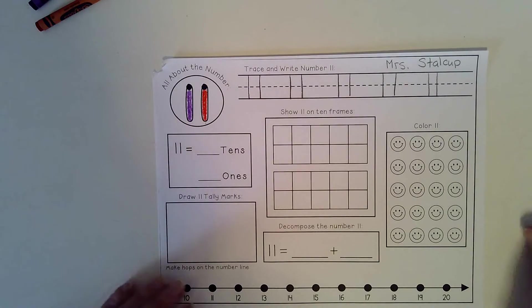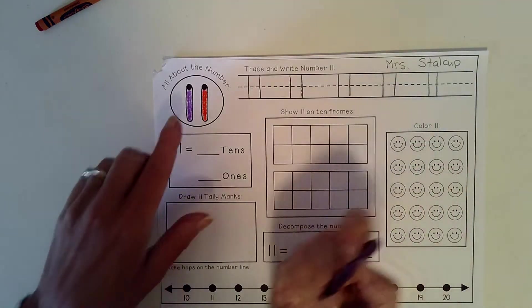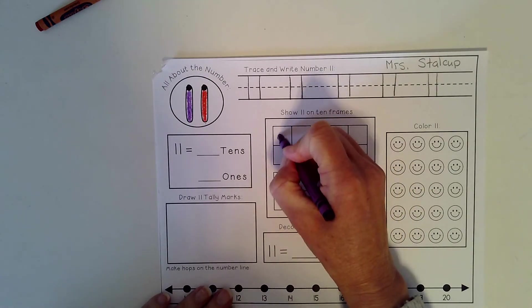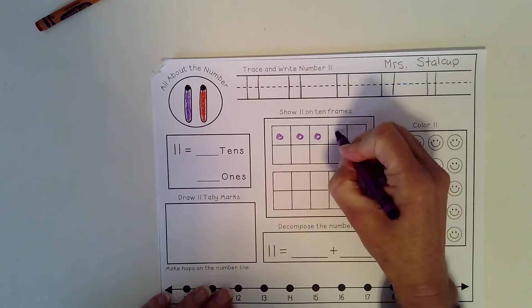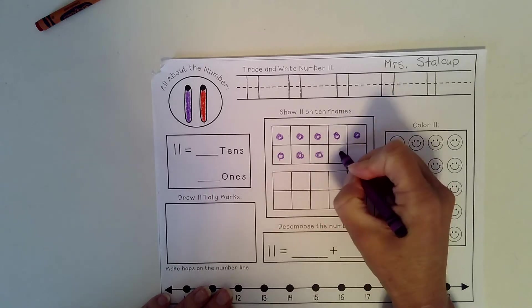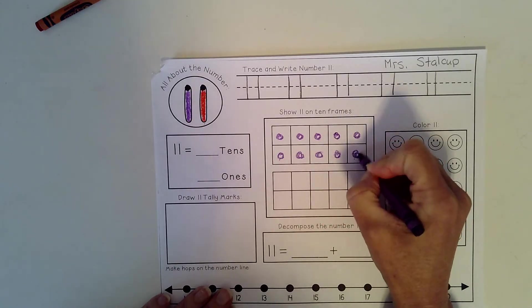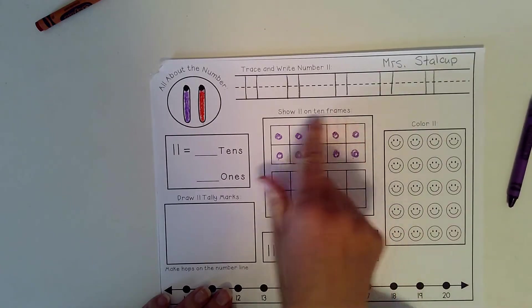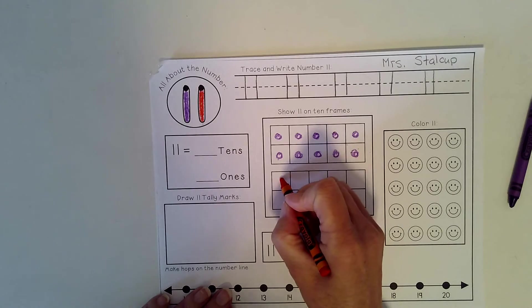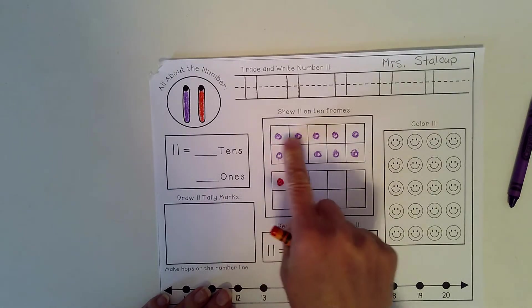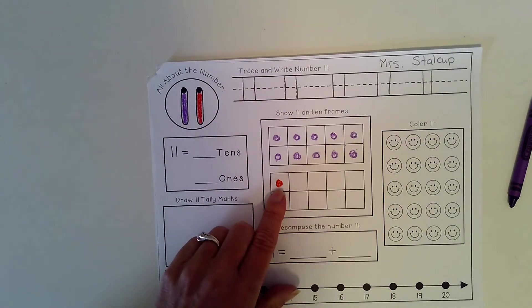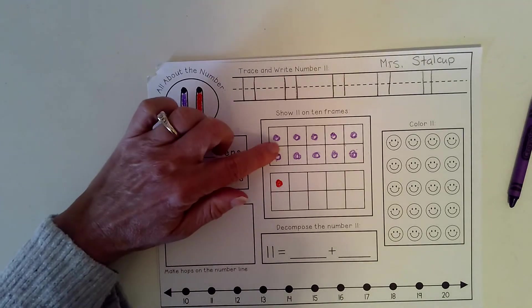Let's draw the number 11. So I'm going to take the purple for my tens first, whatever color you colored your tens with. And let's color 10: 1, 2, 3, 4, 5, 6, 7, 8, 9, 10... 11. And I colored this so I can see very clearly that I have 1 ten, 1.